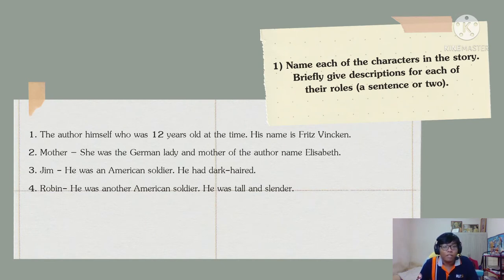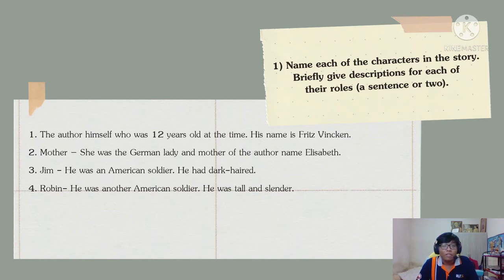The first character is the author himself, who was 12 years old at the time in this story. His name is Prince Wiccan. The second character is the Mother — she was a German lady and mother of the author, named Elizabeth. The third character is Jim, who was an American soldier with dark hair.